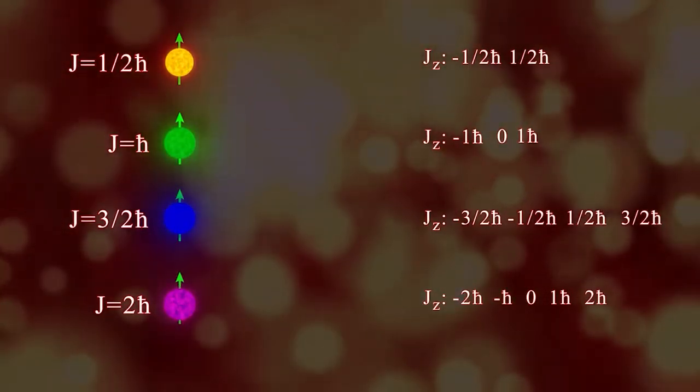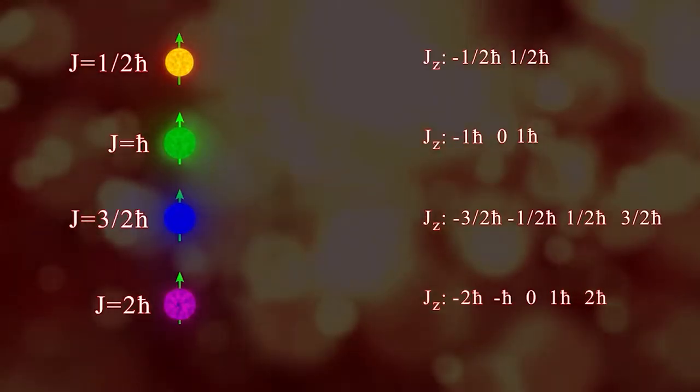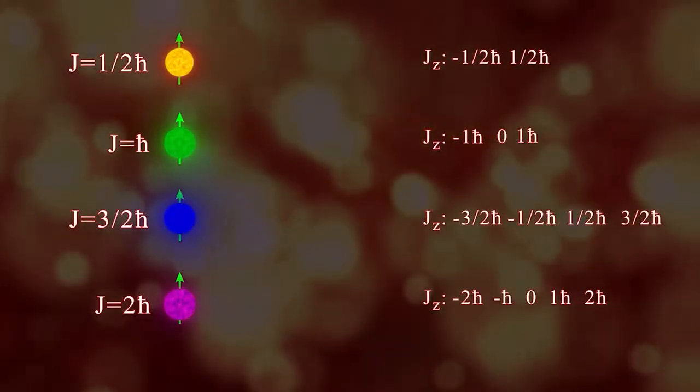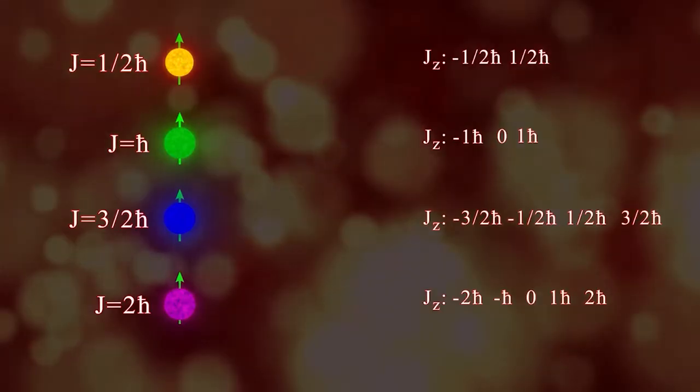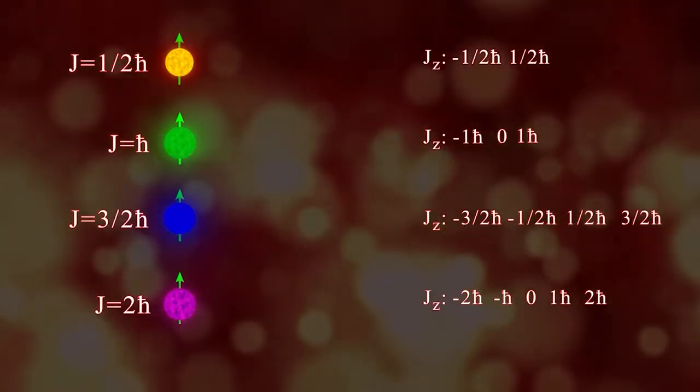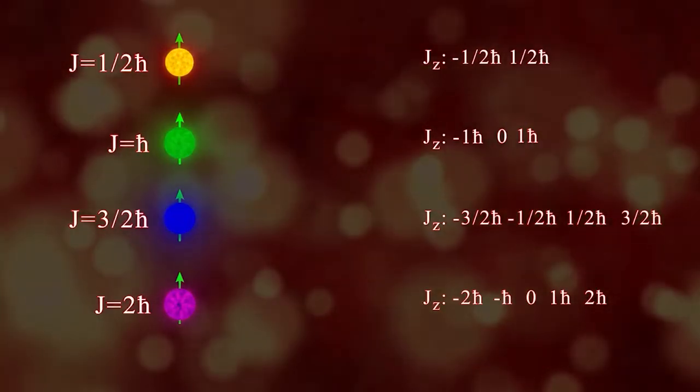I'm sure you've already noticed. For particles with integer spins, the number of possible values of spin projection on an axis is always odd, while for the particles with half integer spins it's always even.